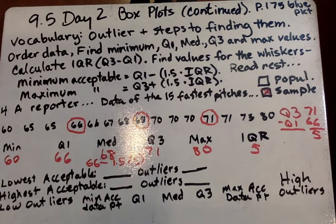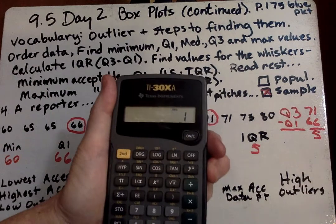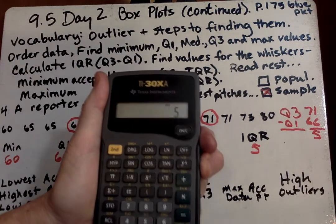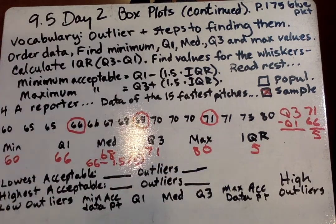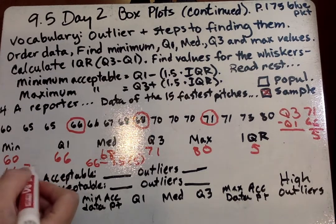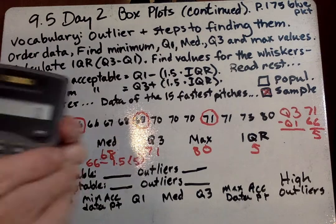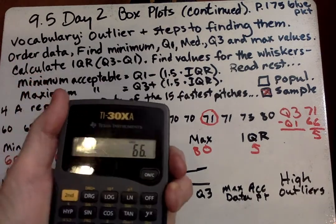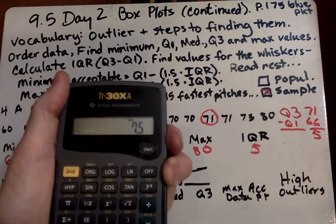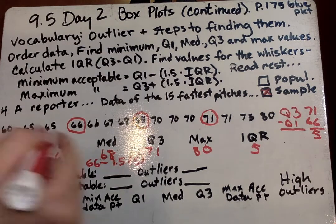So if I go like this, hopefully you can see that. 1.5 times 5, 7.5. So it's 66 minus 7.5. 66 minus 7.5. 58.5. That's our lowest acceptable, 58.5.